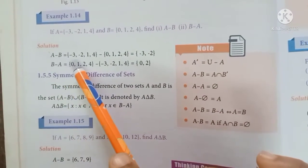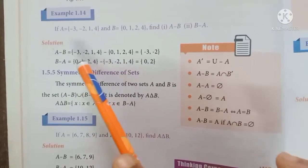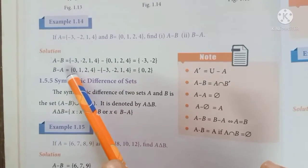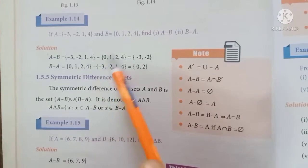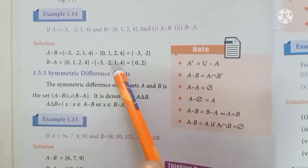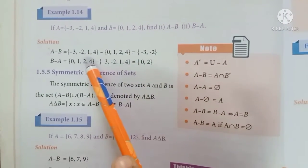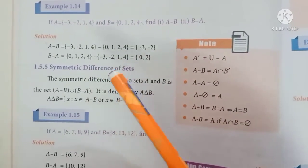For B-A, we look at B and remove elements in A. 0 is in B but not in A, 1 is in both, 2 is in B but not in A, 4 is in both. So B-A equals {0, 2}.